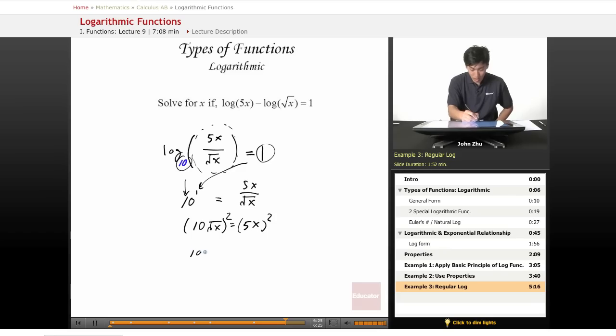And we get 100 times x equals 25x squared. And if we knock off this x right here with this 1x, we are left with 100 equals 25x. And dividing 100 by 25, we get x equals 4.